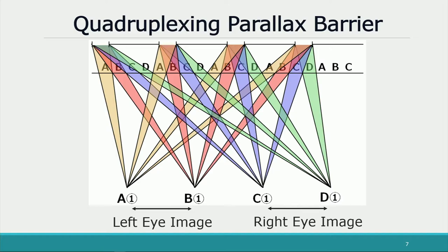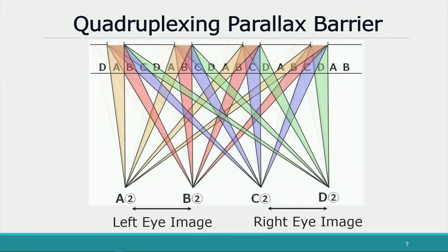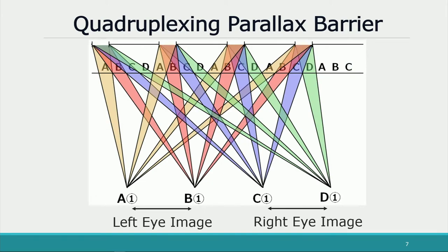To achieve high resolution of the image and expansion of the viewing zone free from crosstalk at the same time, Zhang et al. proposed time-division quadruplexing parallax barrier. Here the image is placed in front and the parallax barrier is placed behind. In this system, the same image is delivered to two of four viewpoints. The left eye image is shown at points A and B, and the right eye image at points C and D. A 3D image without crosstalk can be observed. In this state, the resolution of the stereoscopic image is one quarter. By switching the position of the barrier and each image at high speed, full resolution stereoscopic image can be observed after four frames.